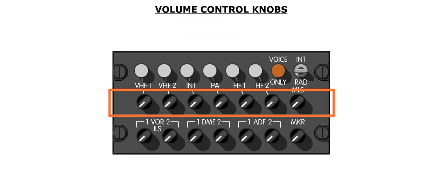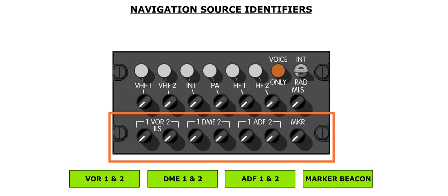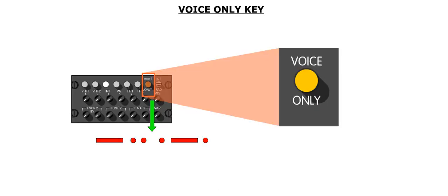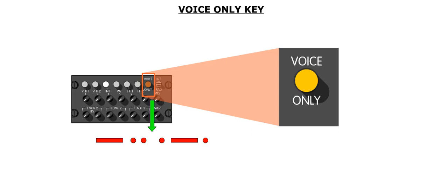The reception volume of the various communication modes is adjusted by the volume control knob located under the transmission keys. Navigation source identifiers can be heard for VOR/ILS, DME, ADF, and marker beacons. Navigation stations often broadcast their identification code using both Morse code and voice mode. The Morse code part can be filtered out by pressing the voice only key, which illuminates amber when pressed. There are two overhead speakers in the flight deck. The volume of these speakers is controlled by an associated loudspeaker volume control knob. The loudspeaker is muted during transmissions to avoid audio feedback, and the loudspeaker volume control knob does not change the volume of any oral alerts.